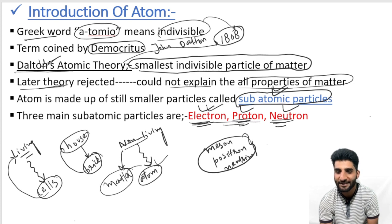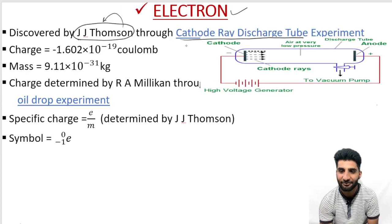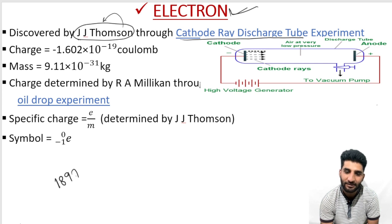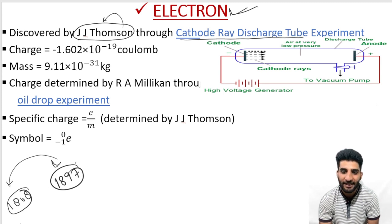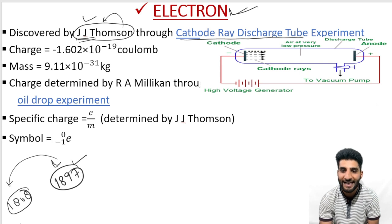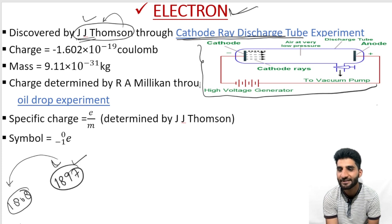Now we will discuss these particles. The first one is the electron. The electron was actually discovered in 1897 by J.J. Thomson. He performed an experiment called the Cathode Ray Discharge Tube Experiment. Through this setup, the electron was discovered. We do not need to study this experiment in detail, but one important thing to focus on is what cathode rays are.